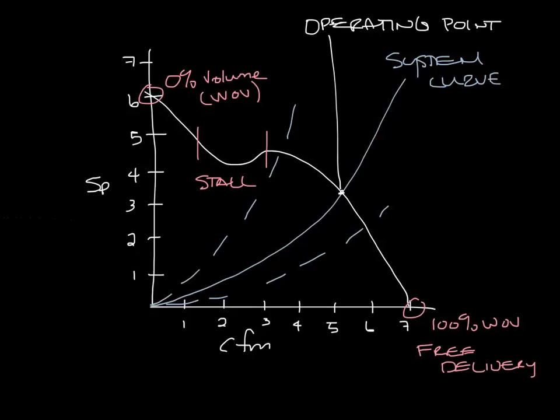So you can see that the same fan in a system with more resistance would have less airflow up over here, or more airflow if there was a lower resistance over here. So if your system has more pressure than you expected, your fan will provide less airflow.